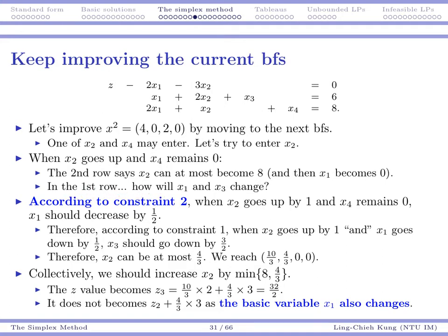But in the first row, it's a little bit harder because when x2 goes up, you see x1 and x3 both existing in row 1. So you have no idea how x1 and x3 will change. You need to be careful here. You need to remind yourself that you still have constraint 2. And according to constraint 2, when your x2 goes up by one unit, your x1 should decrease by one half unit.